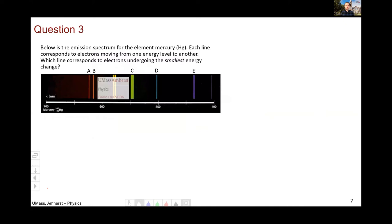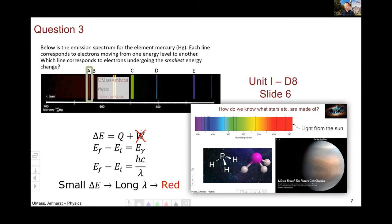Question three was a unit one problem with the spectrum of mercury. You were intended to begin with conservation of energy. As usual, there was no work in the problem. And converting from the energy of the photon to hc over lambda via the de Broglie relation p equals h over lambda, we can determine that a small energy change is represented by a long wavelength, which is red. Very similar to day eight of unit one, slide six, where we explored the application of this technology to understanding the chemical composition of astronomical objects.